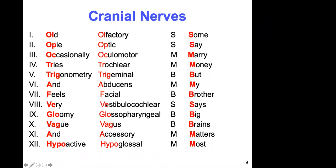Cranial nerve eight — vestibulocochlear — the cochlear portion is for hearing and the vestibular portion is for balance. When I go over the ear, I'll show the vestibular and cochlear portions more carefully. Cranial nerve nine — glossopharyngeal — controls muscles of the back of the throat to help you swallow and also deals with the gag reflex.